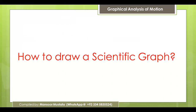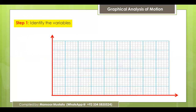Now let's discuss the different steps you have to follow while drawing a scientific graph. The first step is to identify the variables. Since you are plotting a graph between two variables, first find out which two quantities are involved. For example, if you are plotting distance versus time, there are two quantities: distance and time. You need to identify those quantities.